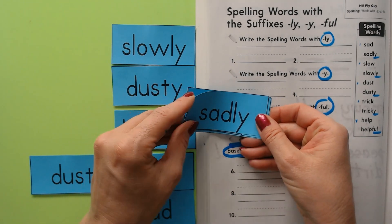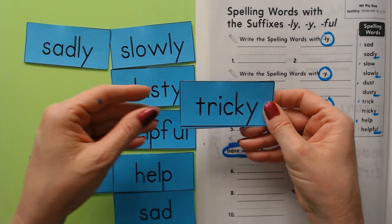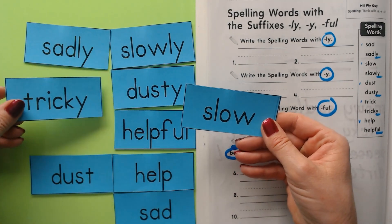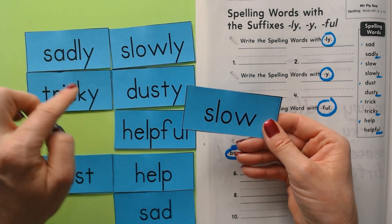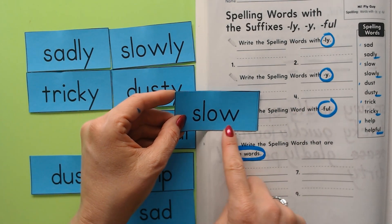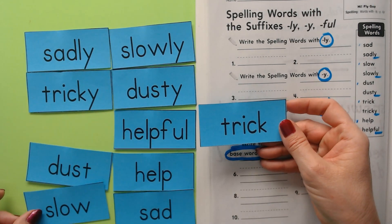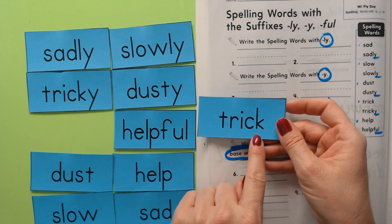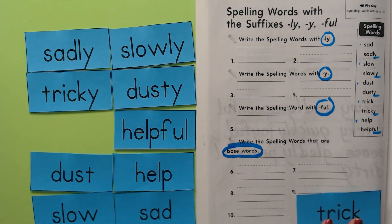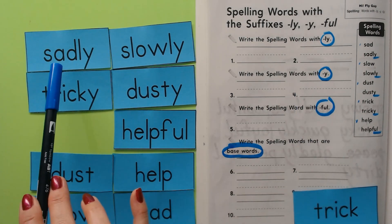Dusty has a -y so we'll put it over here next to the -y suffix. Sadly has a -ly suffix. Tricky ends with a -y suffix. Remember, a suffix is a little word part you put at the back of a word. Slow is a base word — it doesn't have a suffix. And then finally we have the word trick.